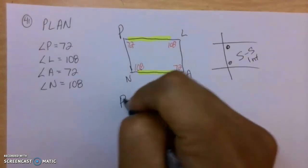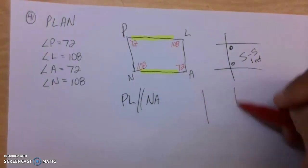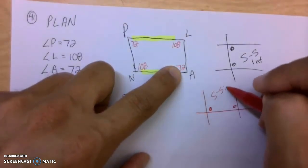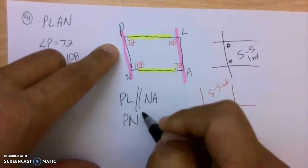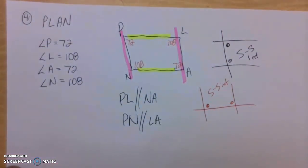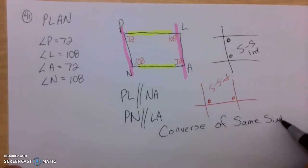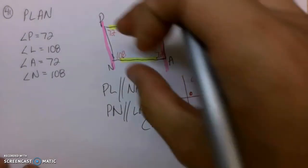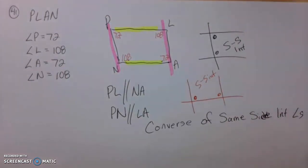So those two lines are parallel — PL is parallel to NA. Also, if I look at going up and down, if this angle here, which is 108, and this angle here, 72, add up to 180, those are same side interior angles and they force these two pink lines to be parallel as well. Because they add up to 180, PN is parallel to LA. So everything is parallel, and the reason why is because of the converse of same side interior angles. That is why the yellow lines are parallel and the pink lines are parallel. If they add up to 180 in all directions, that forces all the lines to be parallel. Sometimes you might only have the pink lines parallel, or you might not have anything parallel because they don't add up to 180.